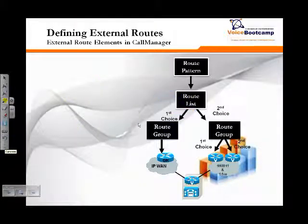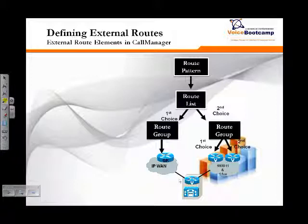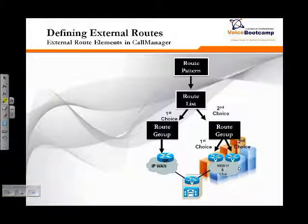Now, in order to define an external route to be able to send calls to the PSTN, you have to configure a series of elements. We start with deploying gateways first. In the previous chapter, we talked about gatekeepers, T1, HT23, and MGCP gateways. Because we will be using any one of those types of gateways to route calls to PSTN, it is very important that we define those gateways first.